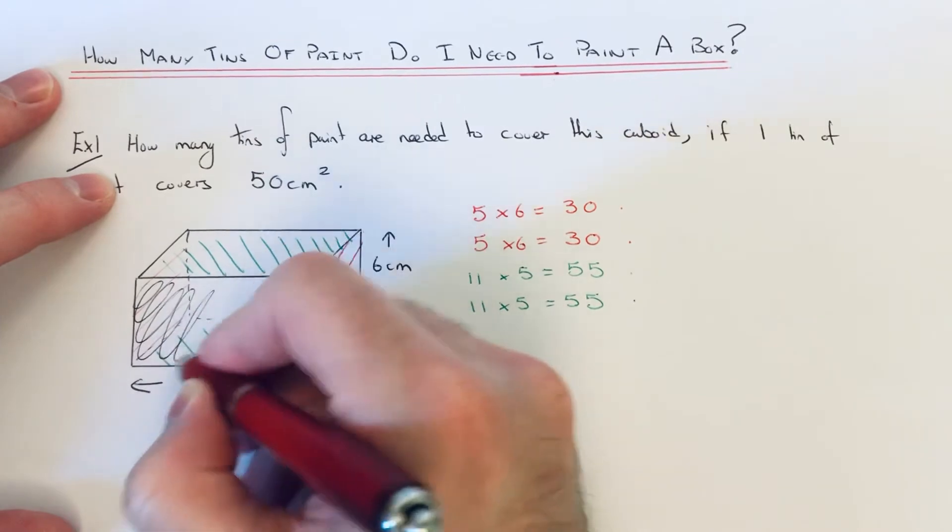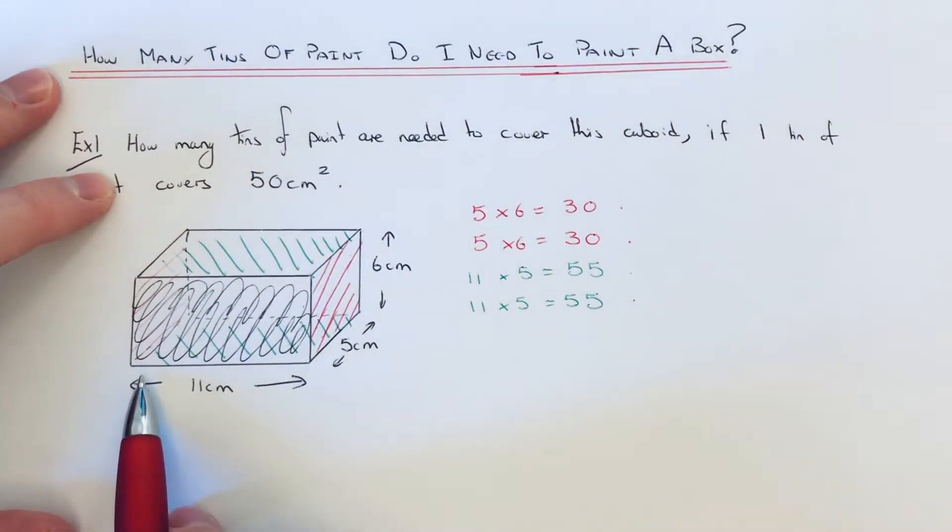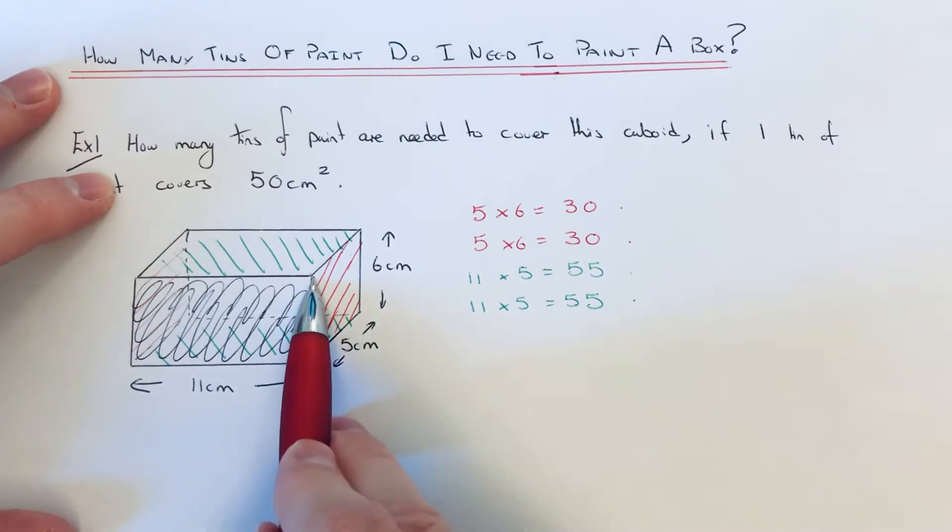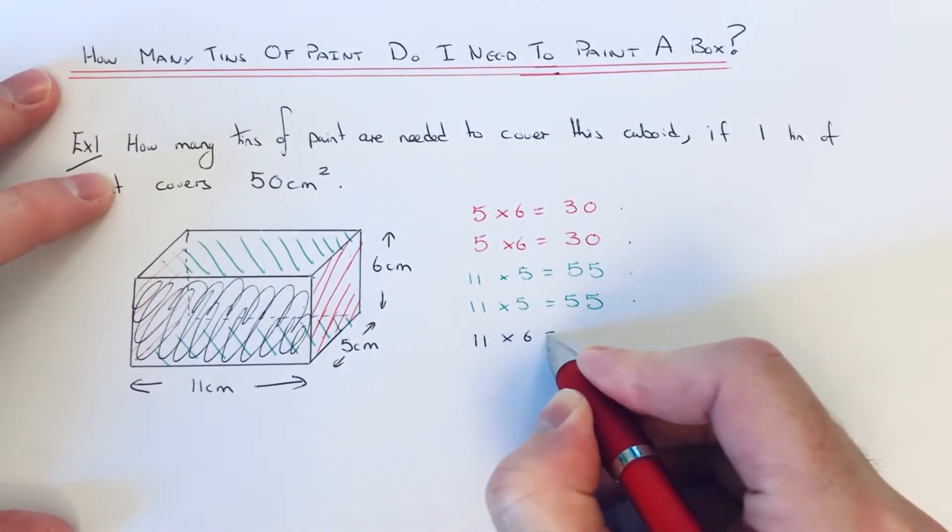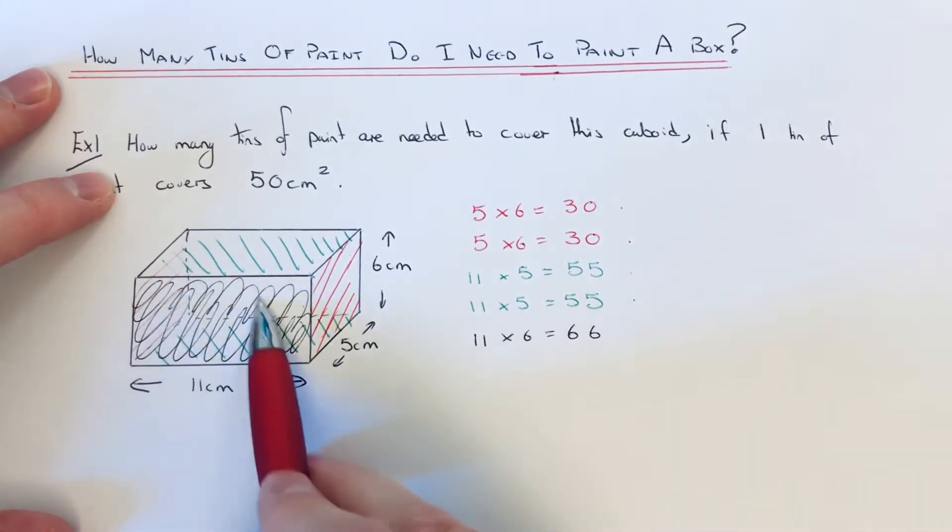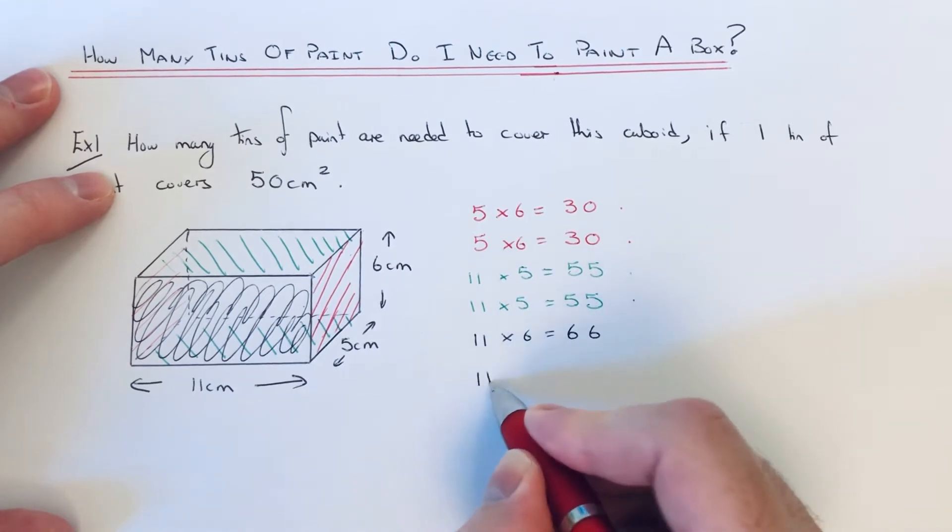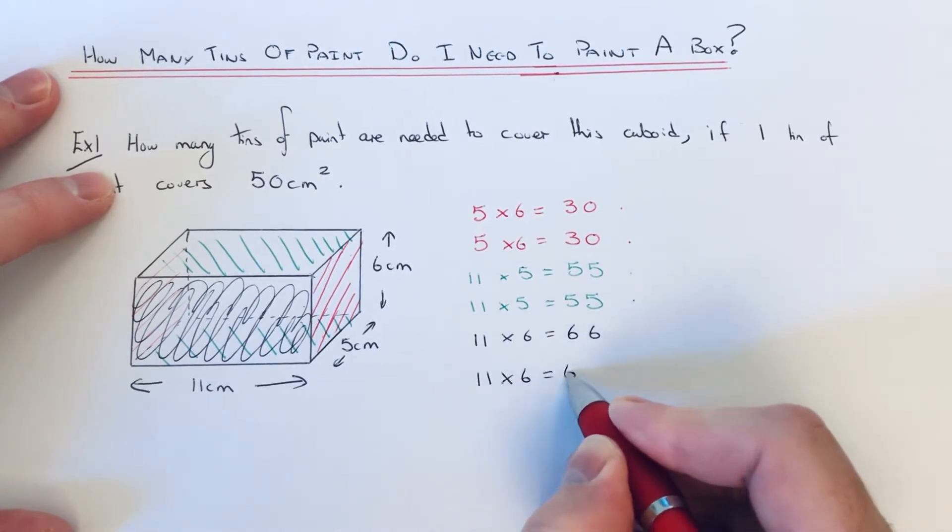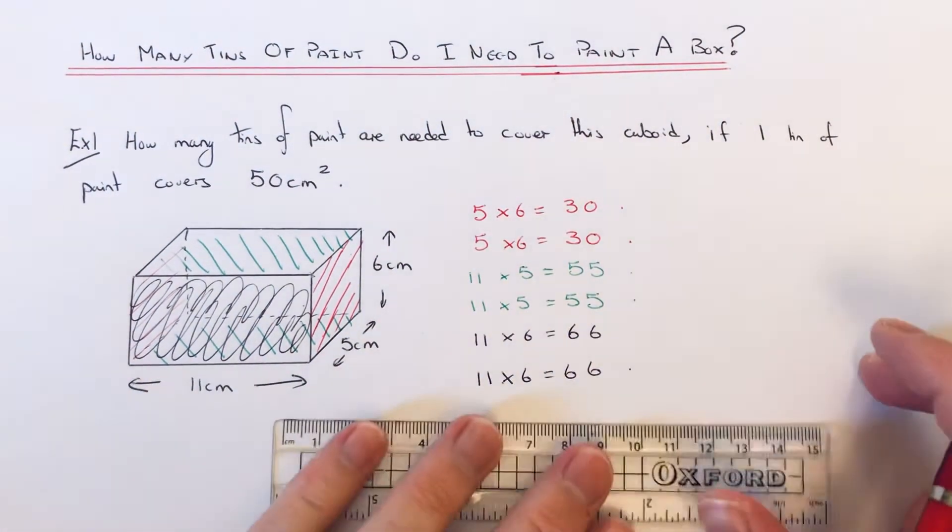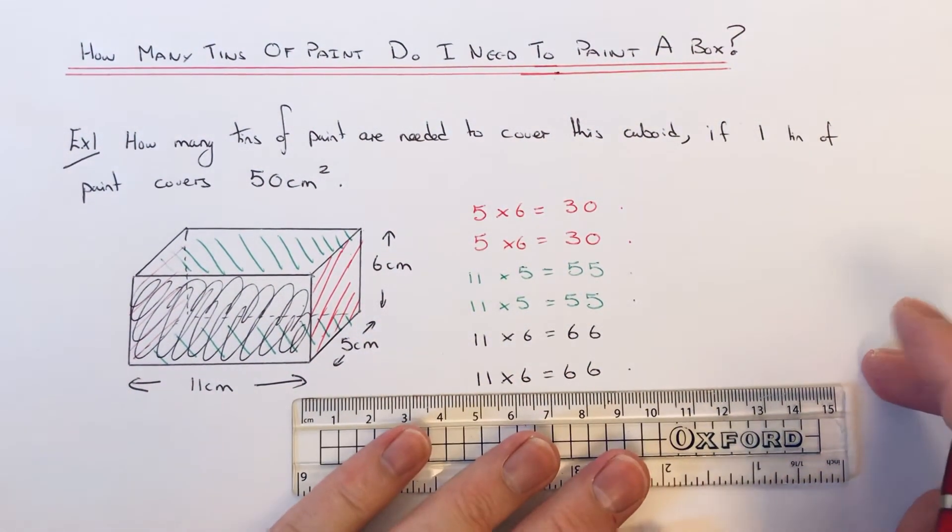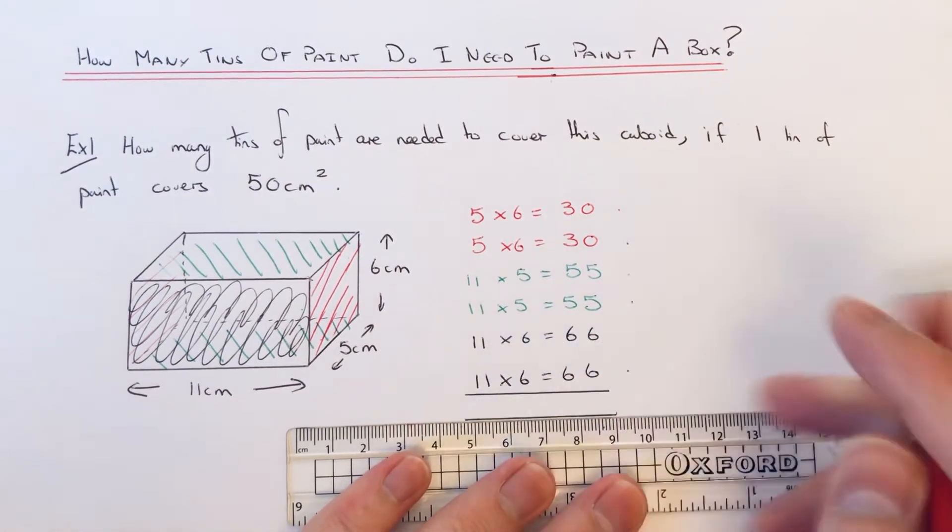And then we've just got the front and back face to do. Let me just show this front facing. The front rectangle is 11 by 6, so if we go 11 times 6, which is 66. The front face is the same as the back one, so we've got to do another 11 times 6. If we add these up, that will give us the total surface area of the box.